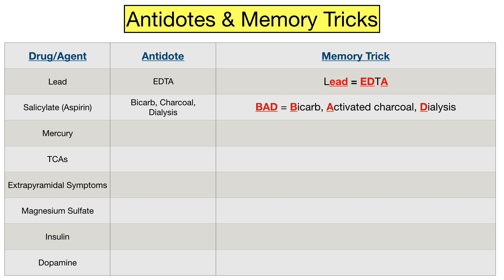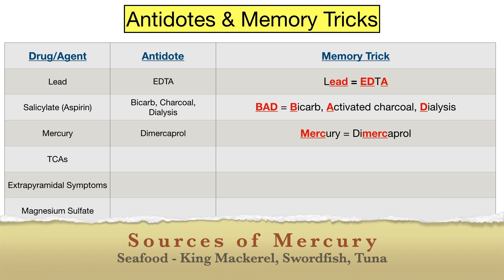Next we have mercury. Mercury toxicity can be treated with dimercaprol, also known as BAL, which is a chelating agent that can bind to metal ions and is used to clear toxic heavy metals from the body. Dimercaprol for mercury is easy to remember because it contains 'merc' in the word. Other chelating options may be succimer and penicillamine. Sources of mercury poisoning include seafood or fish consumption such as king mackerel, swordfish, and tuna.